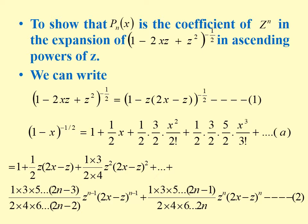We can write (1 minus 2xz plus z squared) whole power minus half as (1 minus z(2x minus z)) whole power minus half. We know the formula that (1 minus x) whole power minus half can be written as 1 plus (1/2)x plus (1/2)(3/2)(x squared / 2 factorial) plus (1/2)(3/2)(5/2)(x cubed / 3 factorial) and so on. If we use this formula: